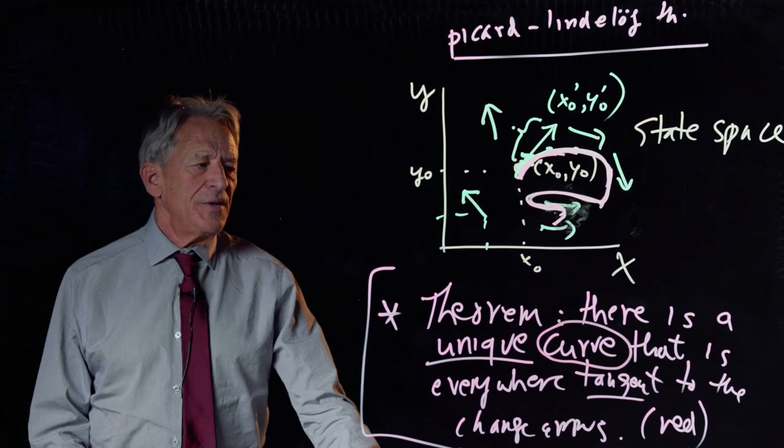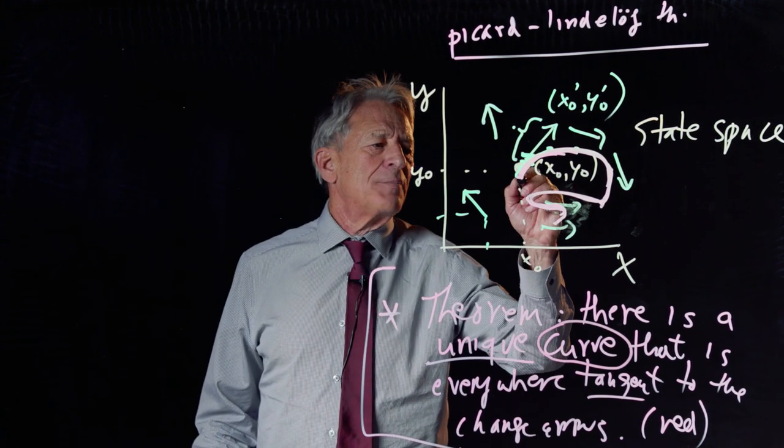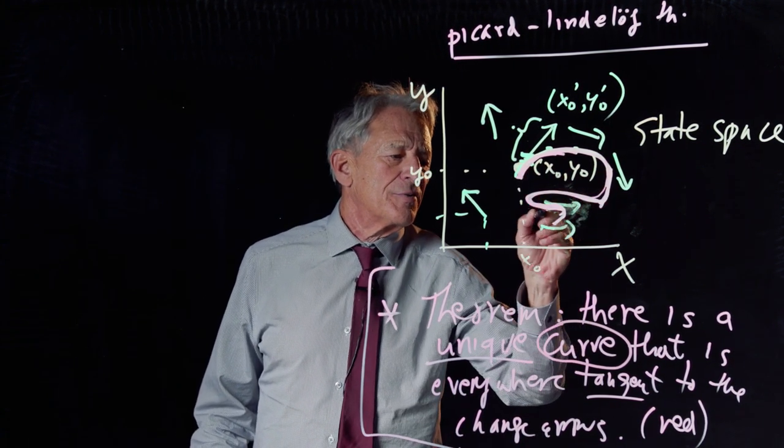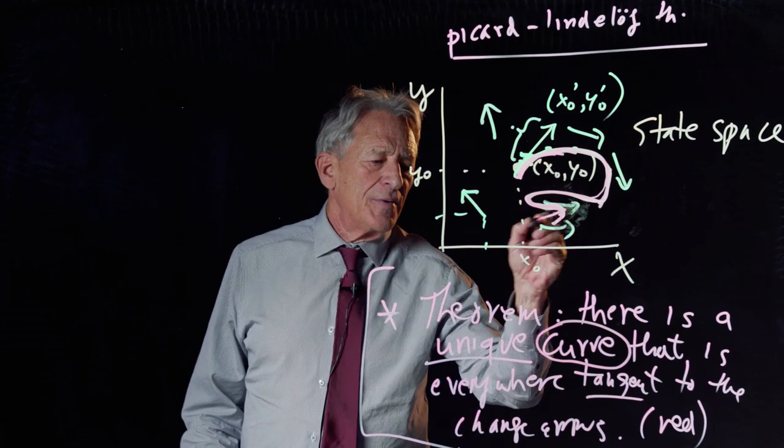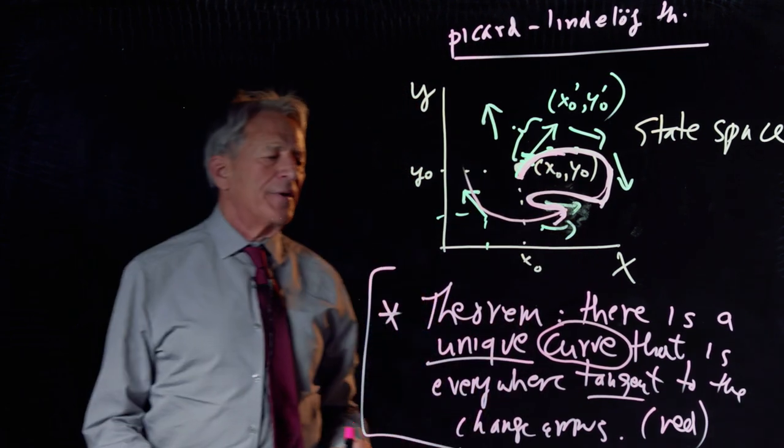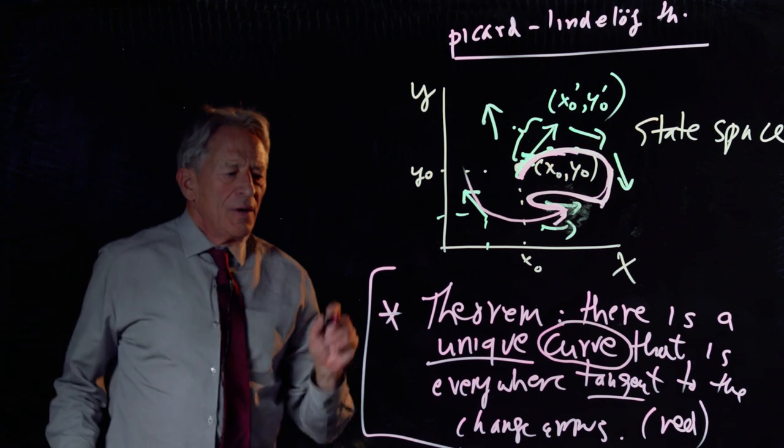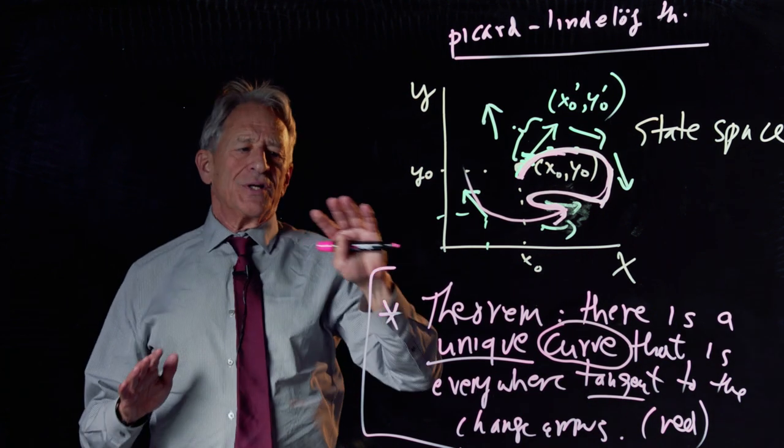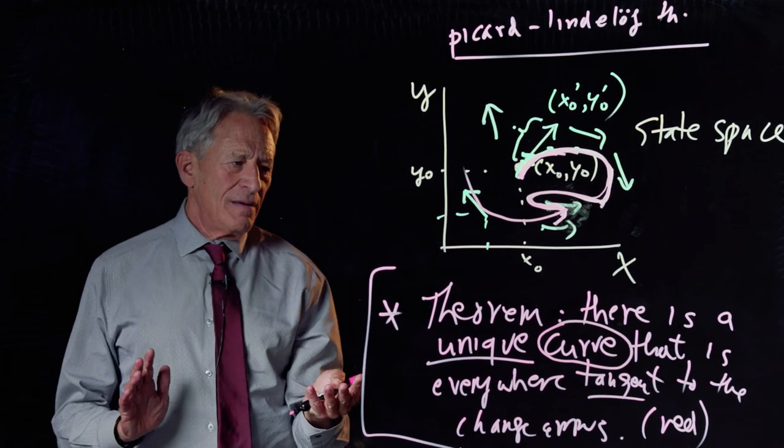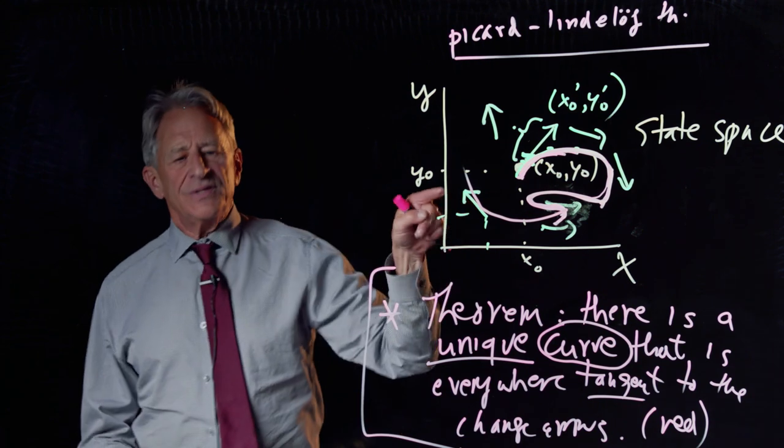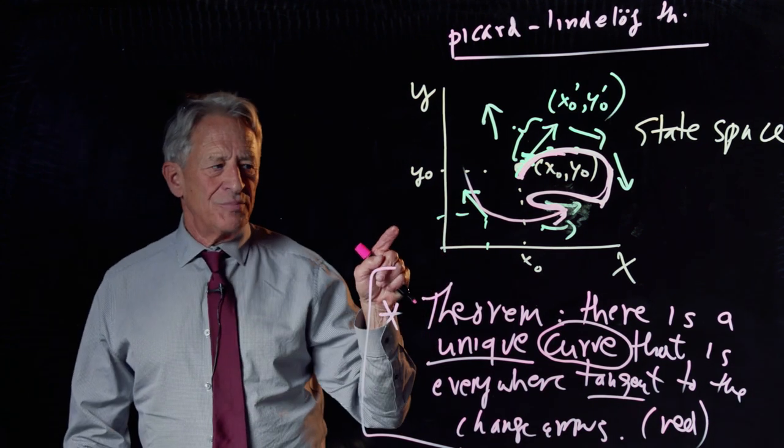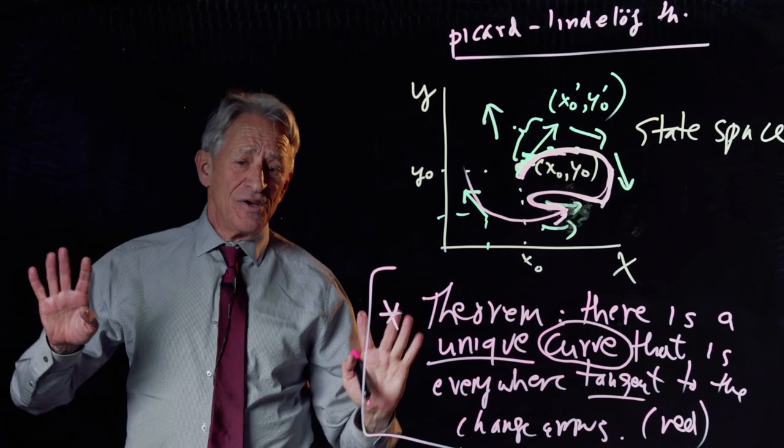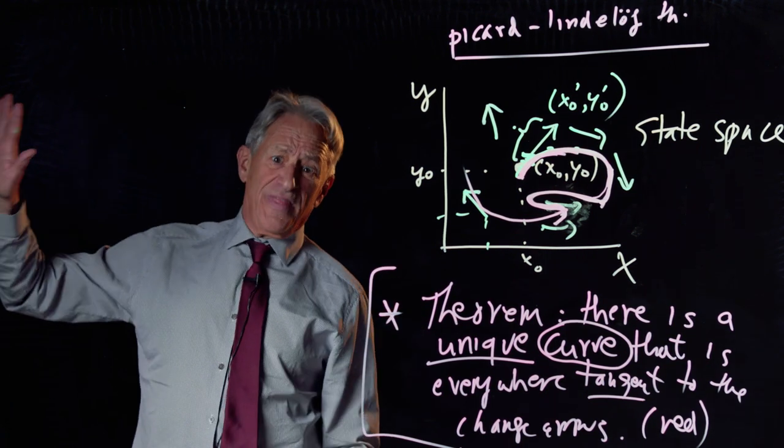Because there is definitely a unique curve. The theorem is not lying. But you'll notice that I'm using, and the theorem is using, the word curve. And that means a geometric object. I'm drawing it right here. Here is the curve. And then that's going to come up here and be tangent there. A curve is a geometric object.